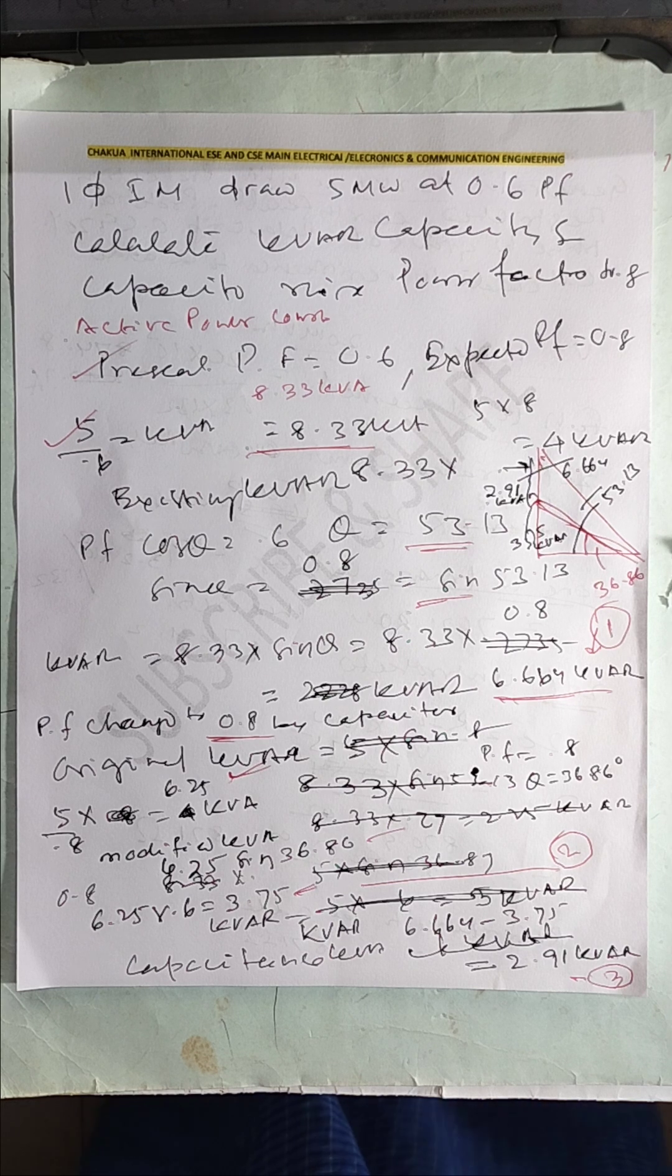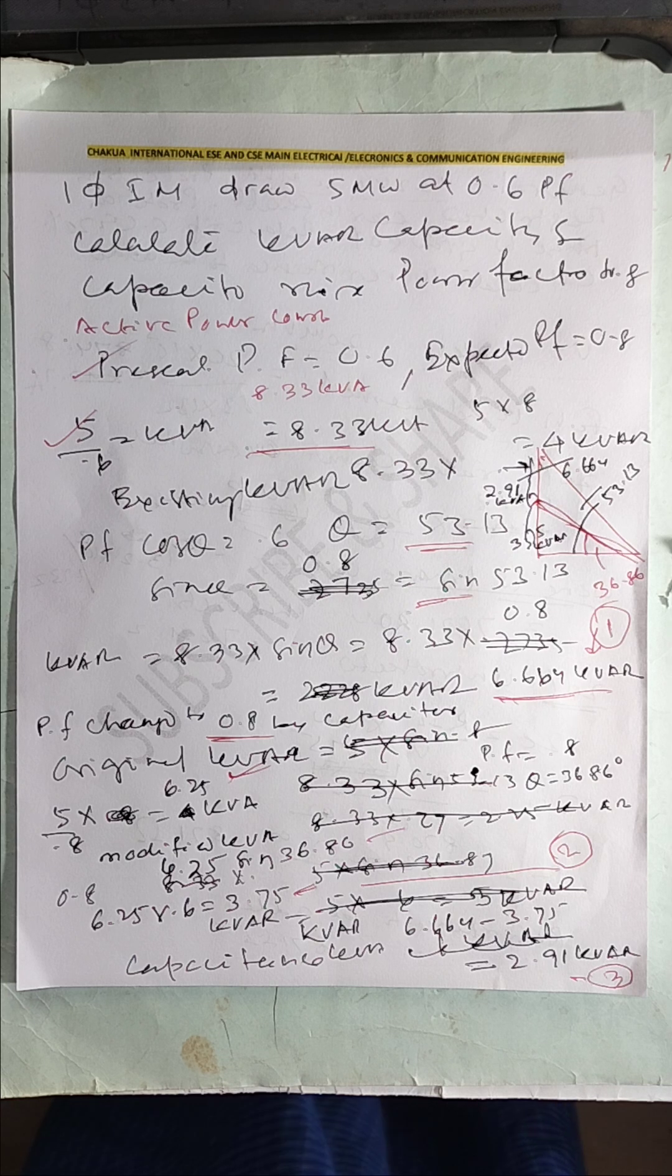In this connection, the active power remains constant. You are adding a simple capacitor to reduce the kVAR capacity.